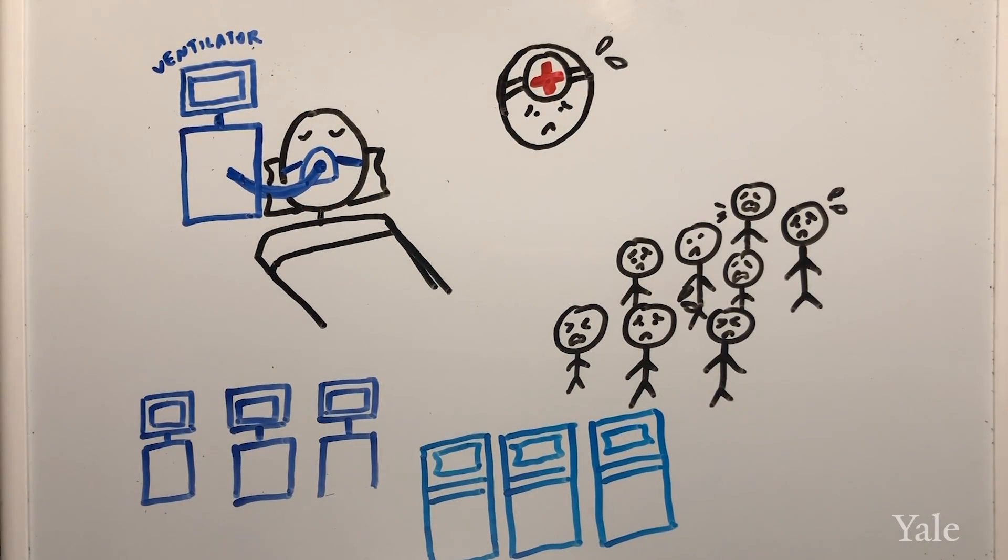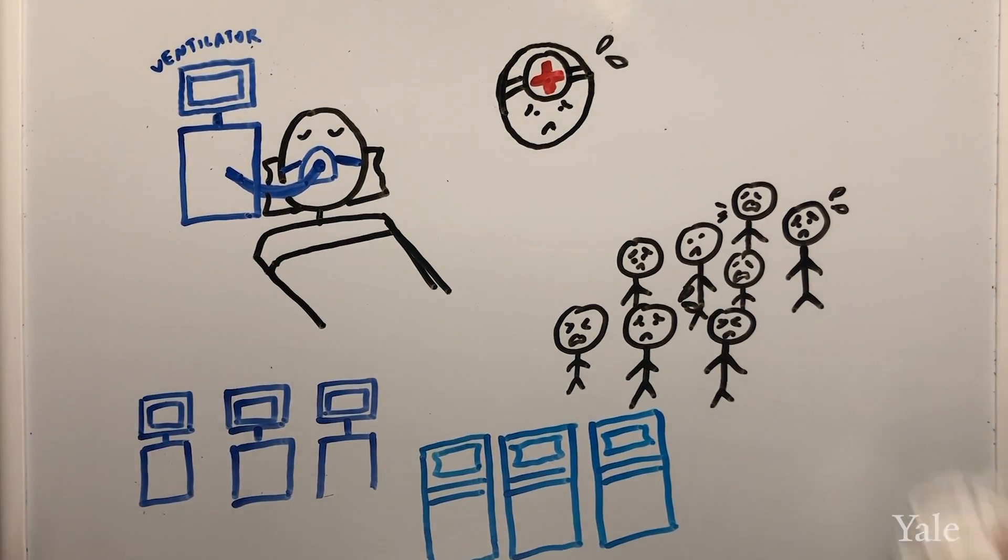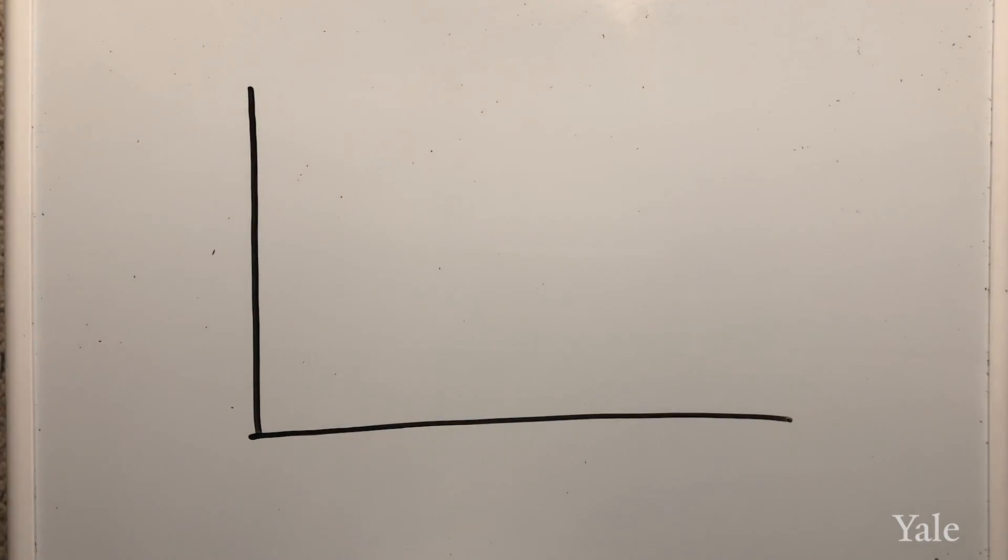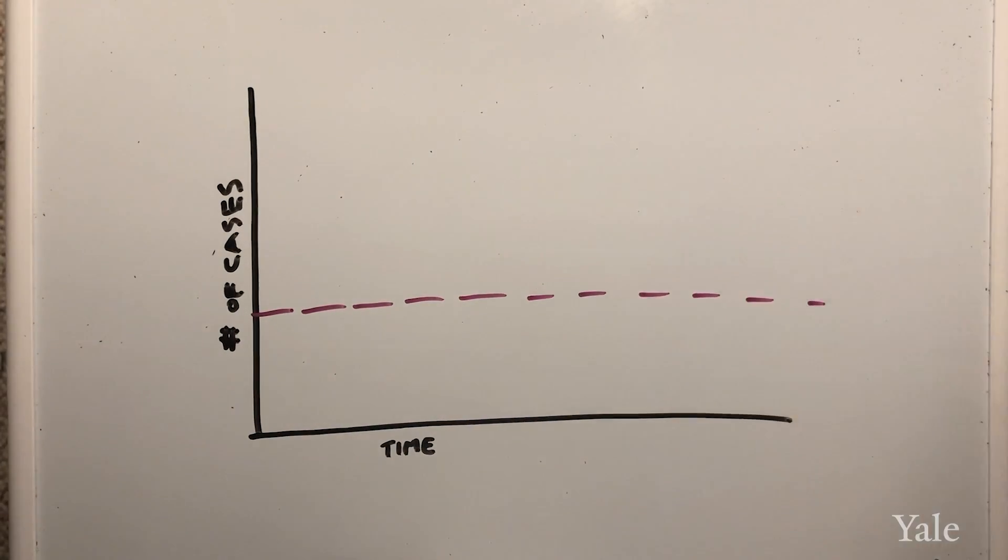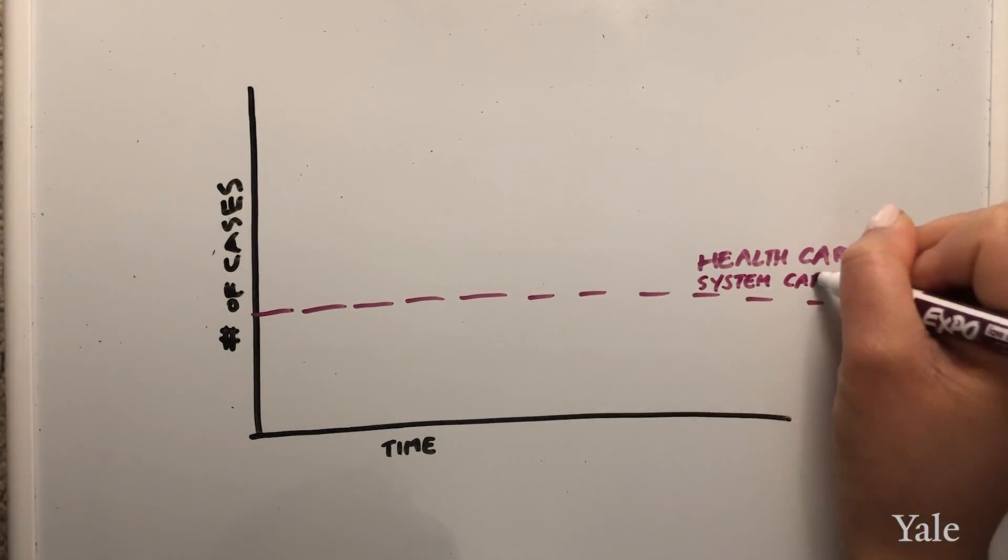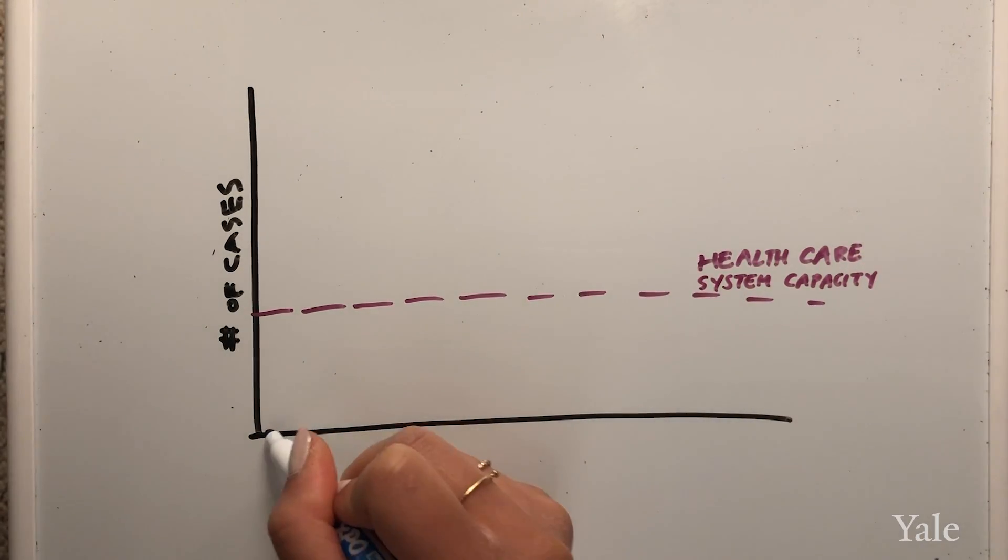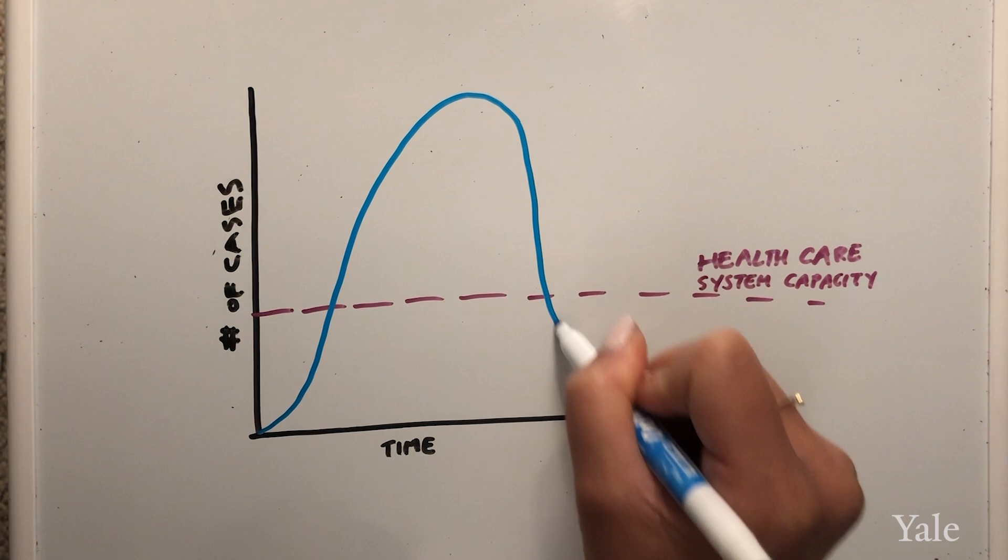This is why spreading out the rate of infection is so critical to allowing our health care system to not become oversaturated. This is why you've probably heard that flattening the curve is so important. That curve refers to the huge influx of cases we're seeing without preventative measures being followed like quarantining and social distancing.